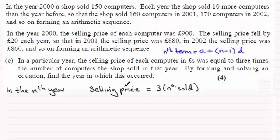So for the selling price, when we're looking at the nth term, a is 900, so therefore we've got 900, then plus n minus 1. We're trying to find out what n is, so we don't know what that is, let's just put it as n minus 1, but the common difference is minus 20. It's going down by 20, so put minus 20 there. And that's equal to three times the number sold.